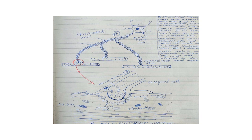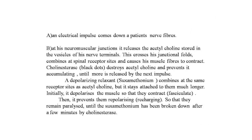On screen is a diagram of the myelinated axon and motor nerve cells, and below it the neuromuscular junction showing junctional clip, nucleus, junctional folds, mitochondria, acetylcholine, and Schwann cells. When an electrical impulse travels down a nerve fiber, at the neuromuscular junction it releases acetylcholine stored in vesicles of the nerve terminals. This acetylcholine combines at special receptor sites and causes the muscle fibers to contract. Cholinesterase then destroys the acetylcholine and prevents accumulation until more is released by the next nerve impulse.